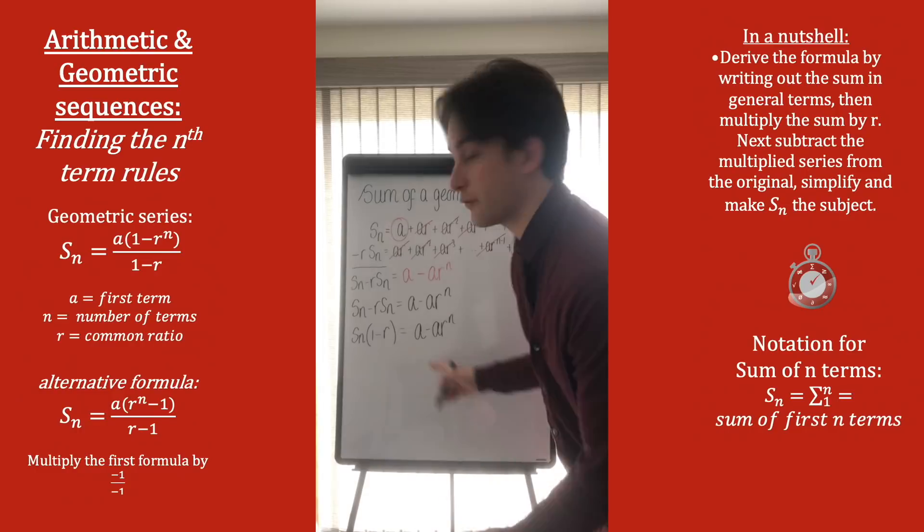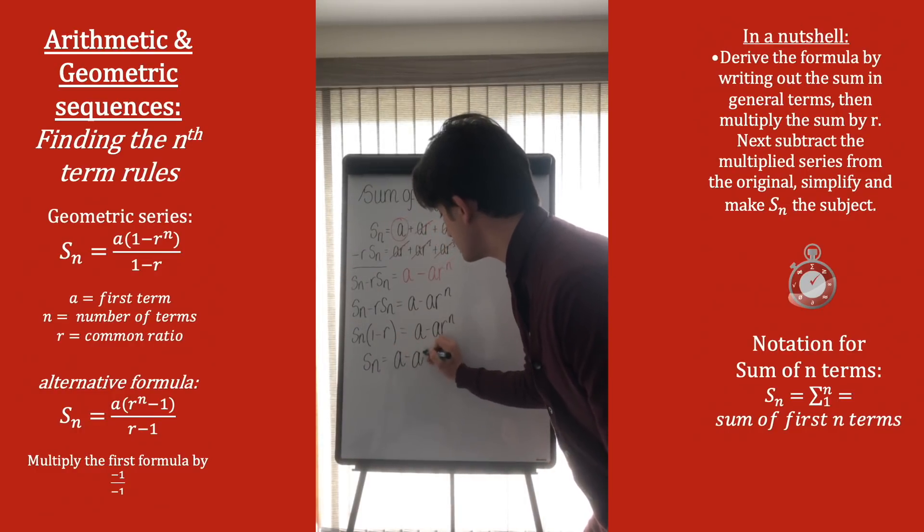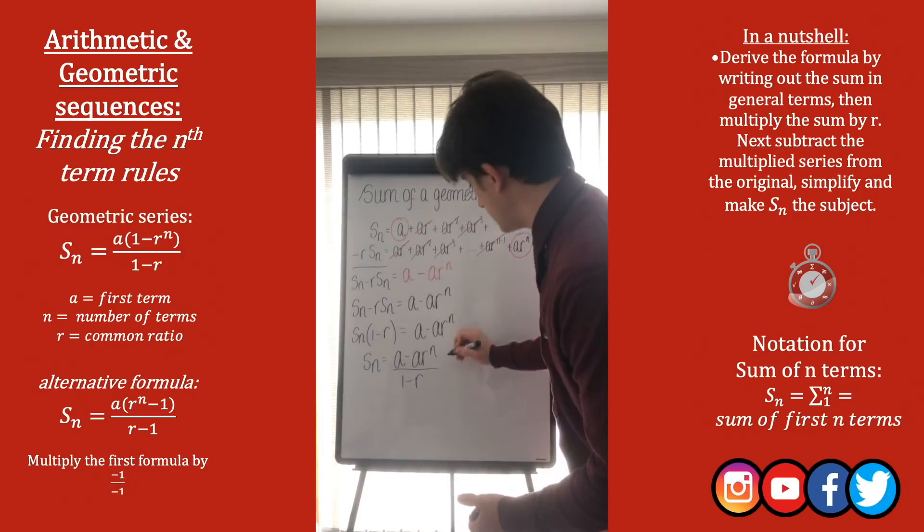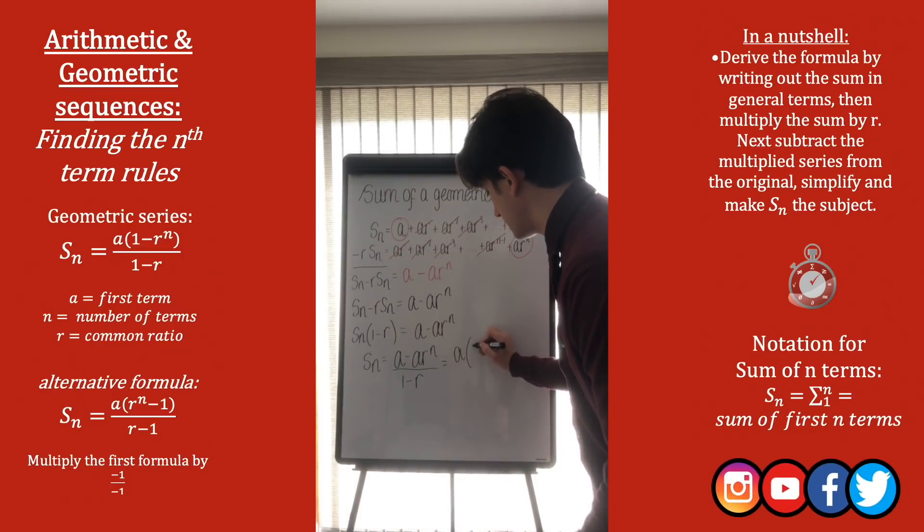And now to get Sn on its own, we divide through by 1 minus r, so we get Sn equals to a minus ar to the n over 1 minus r. And a lot of the time, the formula books will give this in a factorized form, with a taken out as a factor, 1 minus ar to the n, all over, 1 minus r.